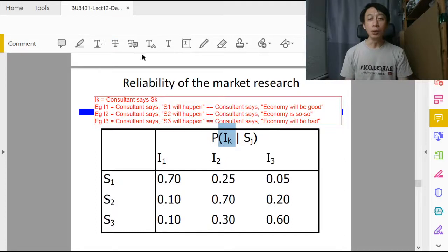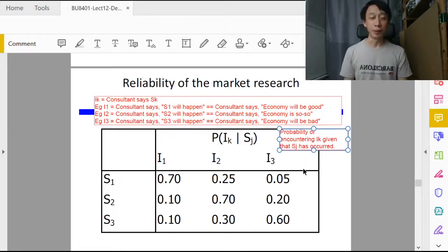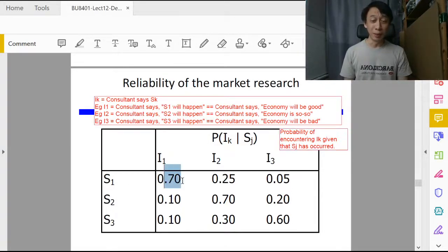So let's write that down before we forget. It's the probability of encountering I of k given that S of J has occurred. So again, I of k is a future event.